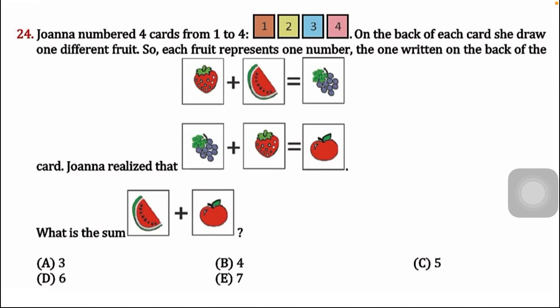Jonah realized that there are two equations: strawberry plus watermelon equals grapes, and grapes plus strawberry equals apple. The numbers written on the back of the cards are one to four, and they are not repeating — every card has only one unique number from one to four.